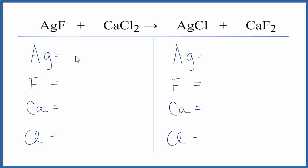Let's count the atoms up. We have one silver, one fluorine, one calcium, and two chlorides. On the product side, we have one silver, two fluorines, one calcium, and one chloride.